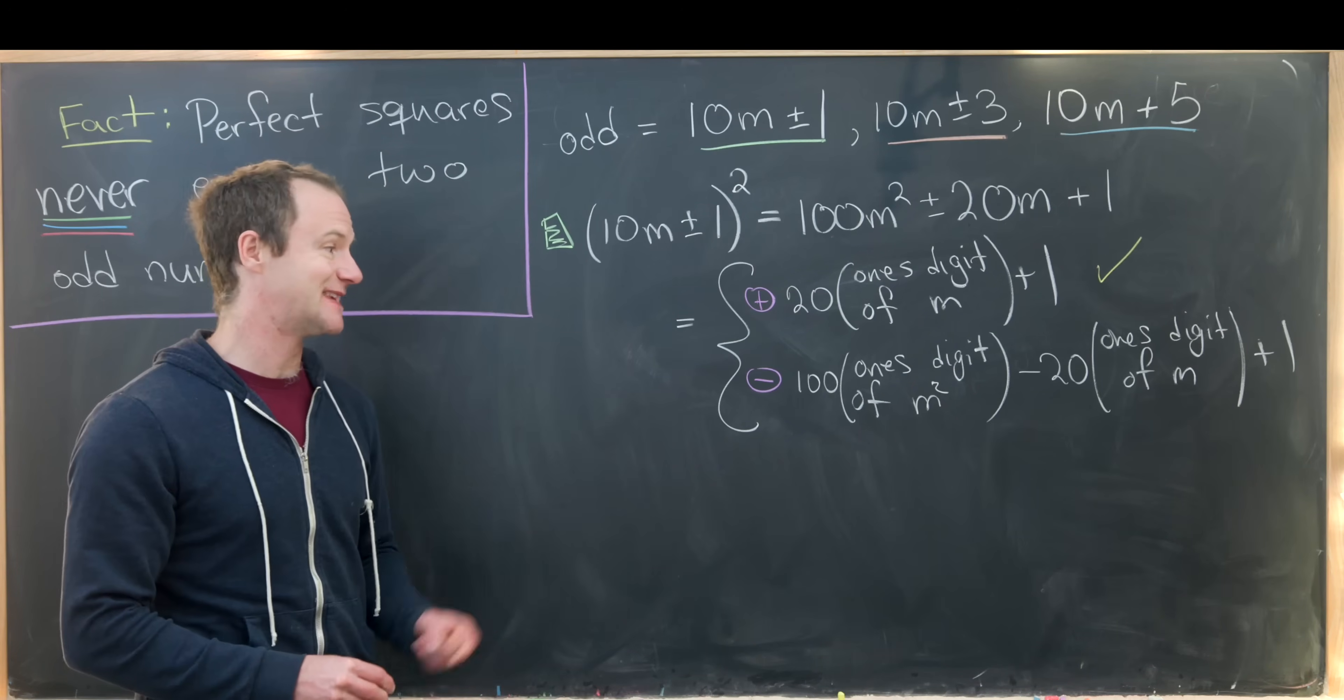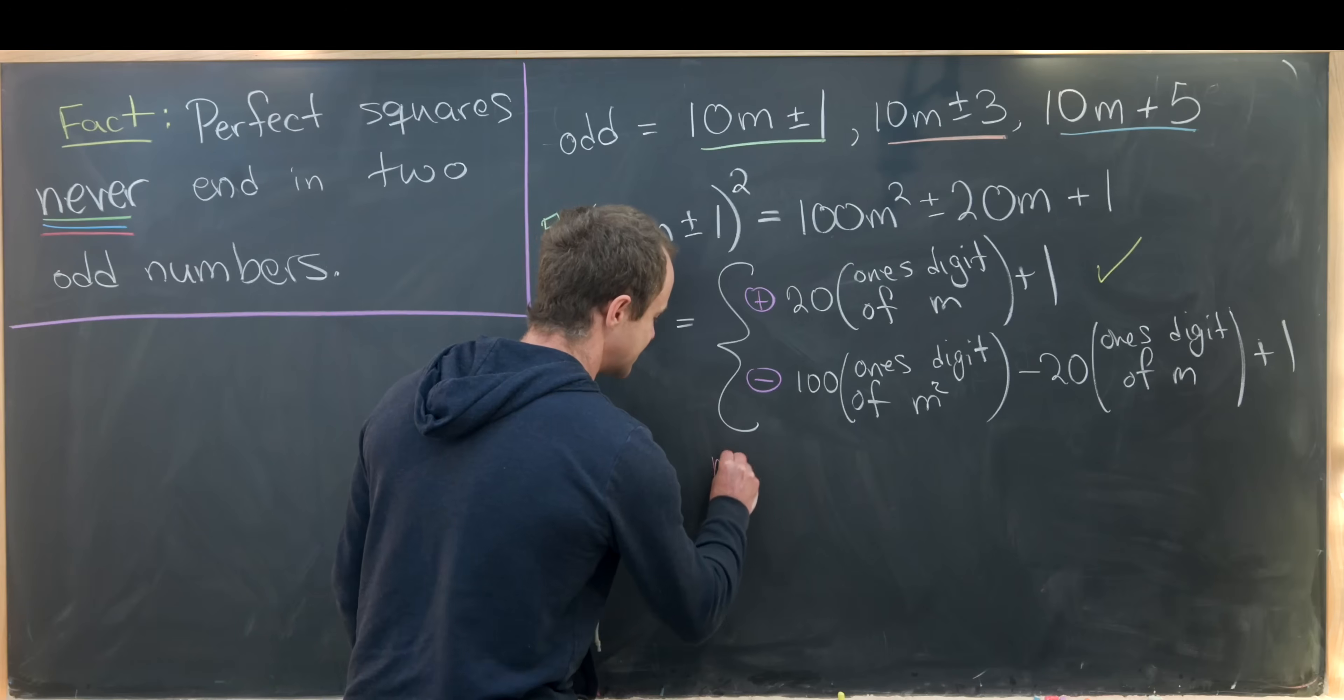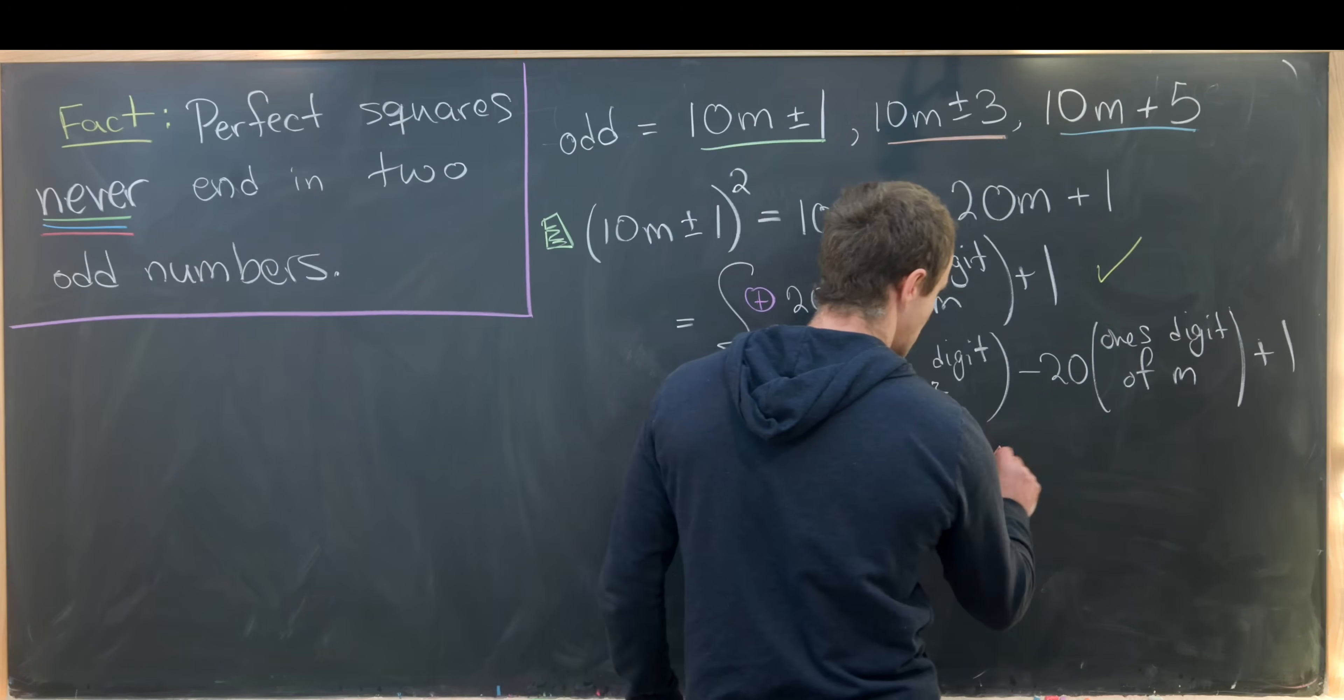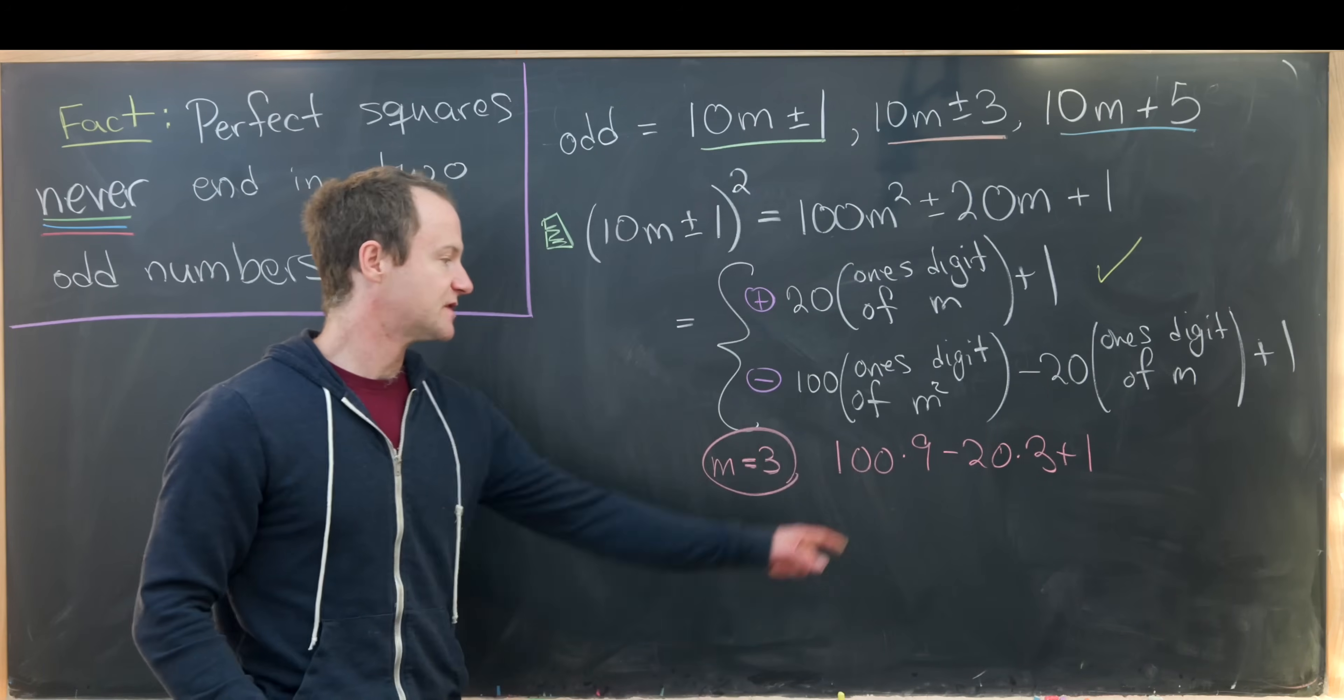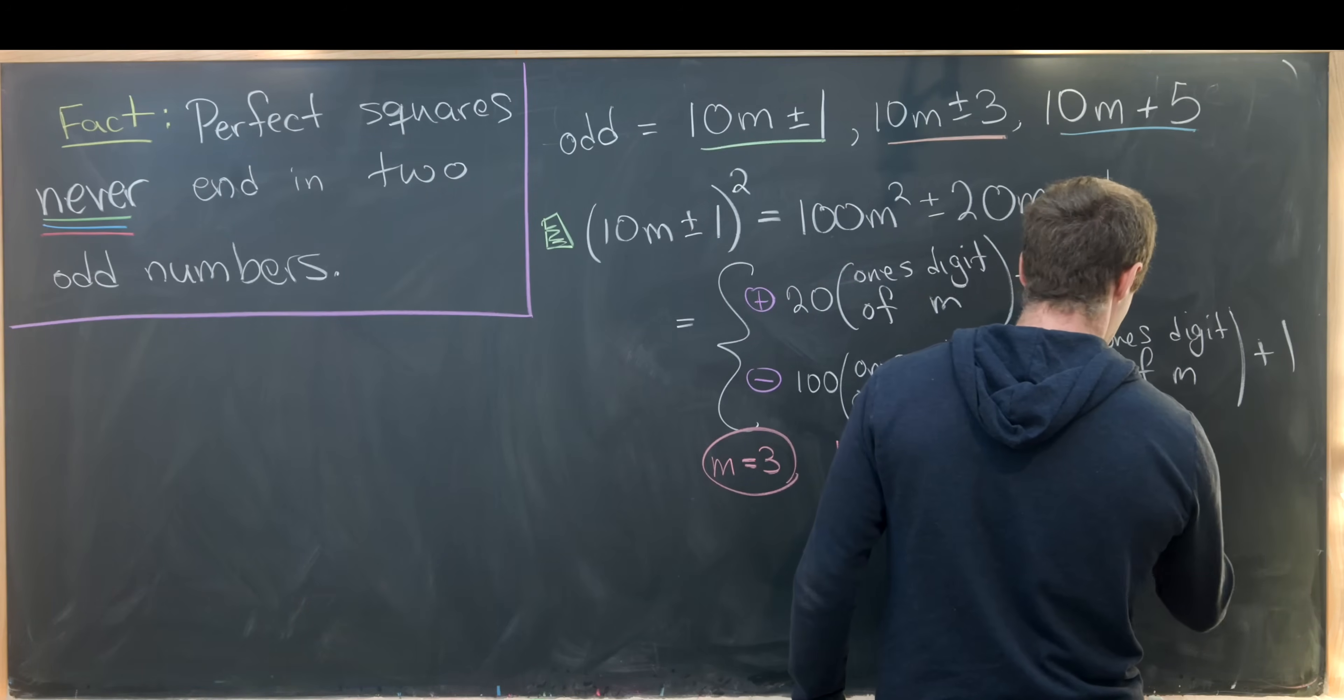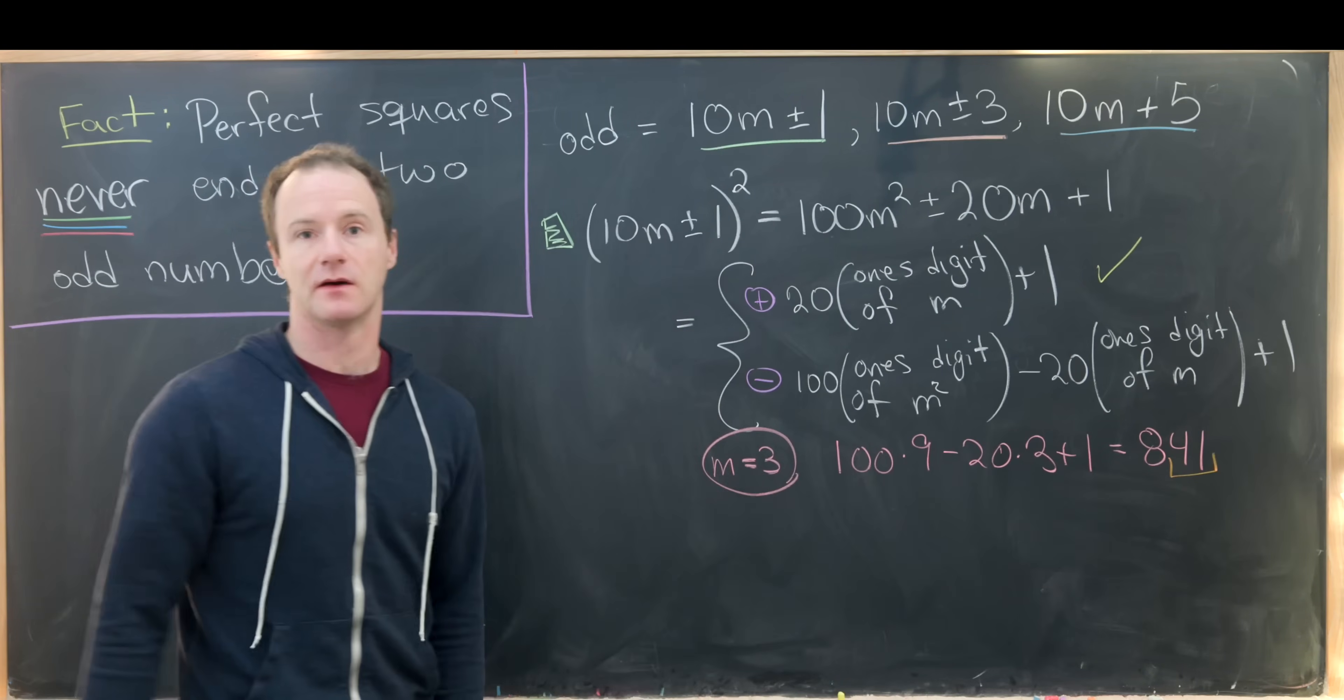And we can play a game just to test that if we want to, although it's not super necessary. So notice if m is, for instance, equal to three, then this is going to end up being 100 times nine minus 20 times three plus one. So there we have 900 minus 60 plus one. So that's going to give us 841. But obviously that ends in an even number and then an odd number.